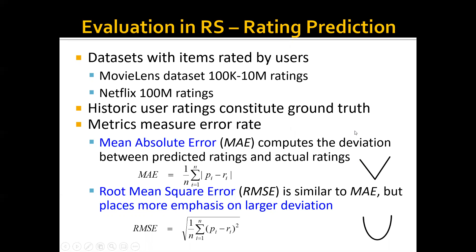To evaluate the performance of recommender systems quantitatively, we need evaluation metrics to measure the error rate. One metric is Mean Absolute Error (MAE), which computes the deviation between the predicted ratings and the actual ratings using absolute values — where P is the predicted rating and R is the actual rating. Another metric is Root Mean Square Error (RMSE), which is similar to MAE but places more emphasis on larger deviations due to its quadratic form, causing the error to grow quickly as deviation increases.